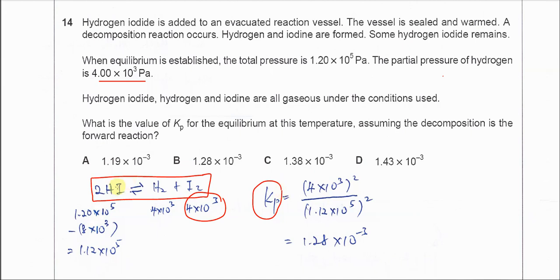So we need to know the partial pressure of HI. It's very easy - we use the total pressure minus the partial pressure of the two products. So the remaining is the partial pressure of HI because the sum of all partial pressures is the total pressure of the gas mixture.